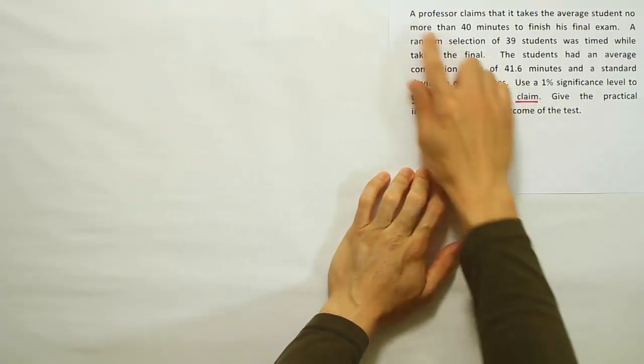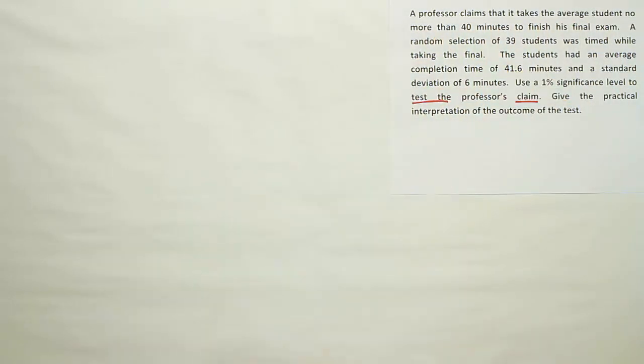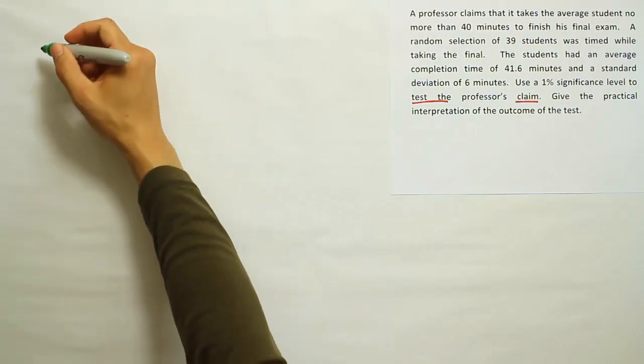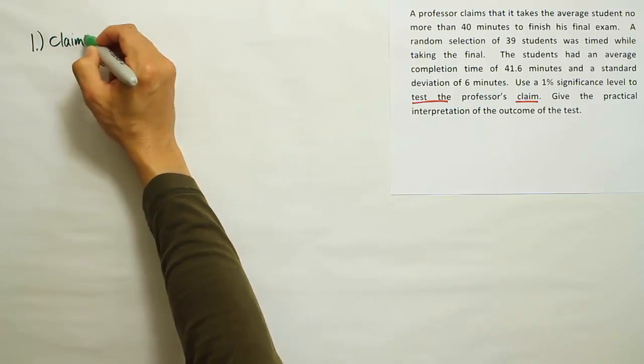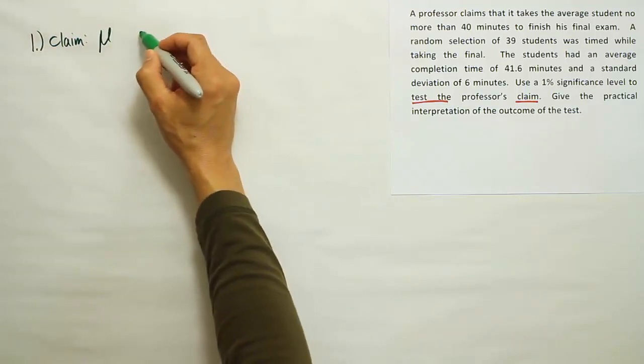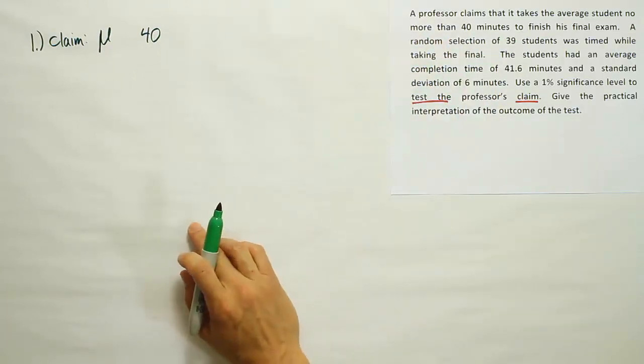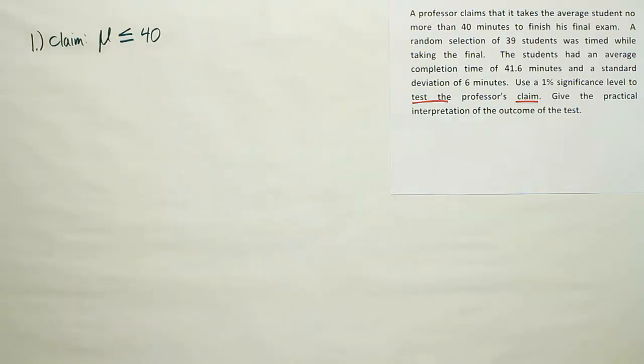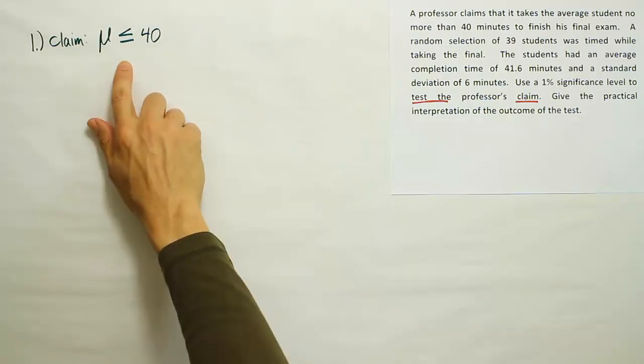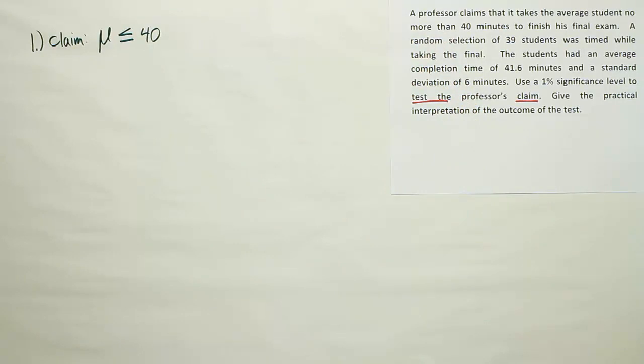So it says test the professor's claim. It says a professor claims that it takes the average student no more than 40 minutes. So in symbols, we're going to write this down as the mean related to 40 minutes. When we say no more than, what does that mean? That means a maximum. It shouldn't take any more than that. So it should take less than or equal to 40 minutes. So that's how the claim is written in symbols. Watch out for these phrases like no more than.